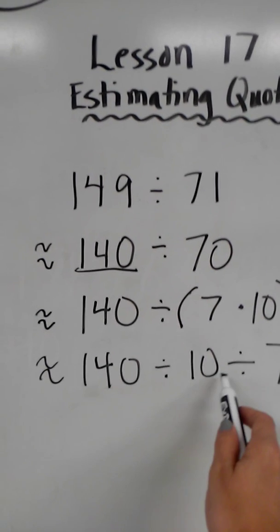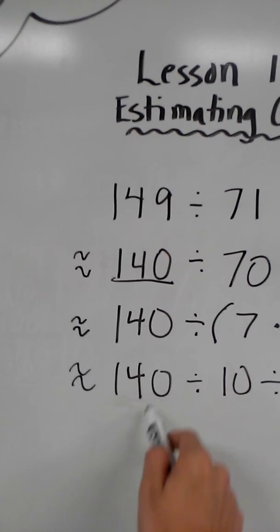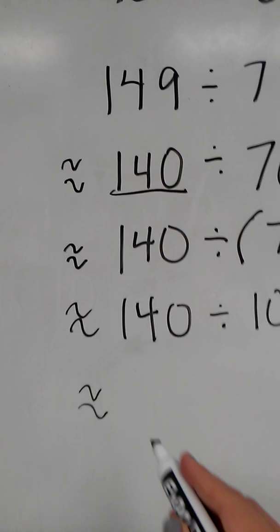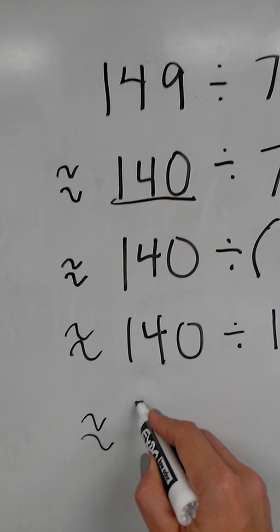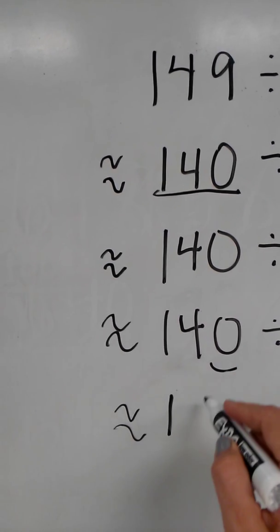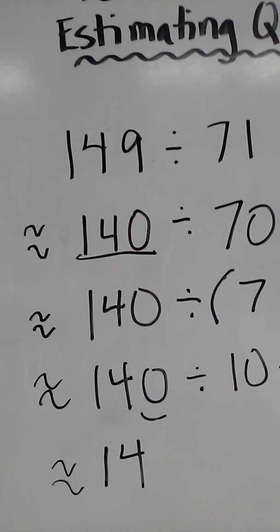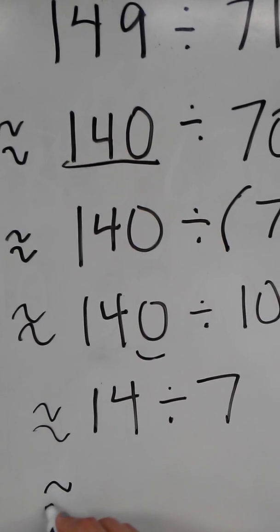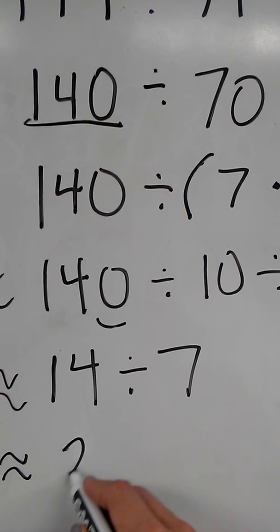So the first thing I'm going to do, using the patterns of 10, I know that dividing by 10 moves my decimal one time. Sorry for my sloppy approximate signs. So when I move my decimal one time here, 140 divided by 10 is 14. Then I still need to divide by 7. And 14 divided by 7 is 2.